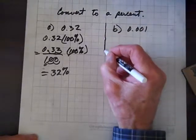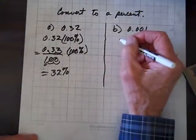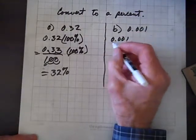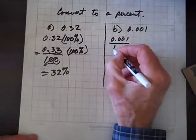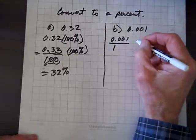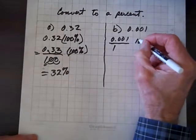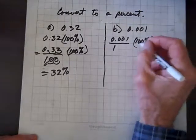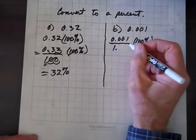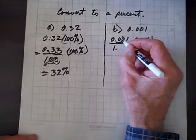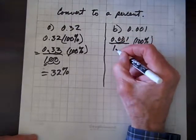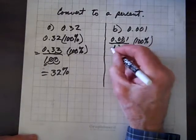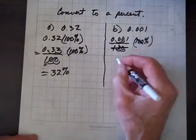So, let's do the same thing with this guy. So, we've got 0.001, and I'm going to stick that over 1, and I'm going to multiply by 1 in the form of 100%. And we've got a decimal here. I'm going to move this over twice, this decimal. That means I have to move this decimal over twice.